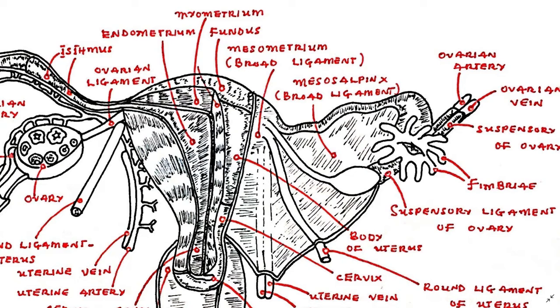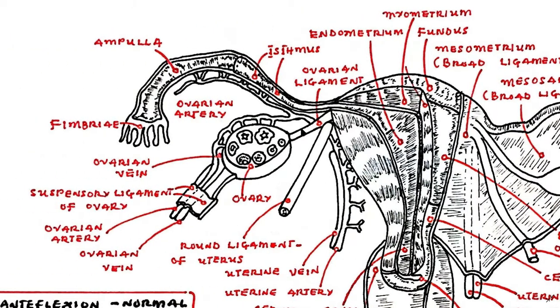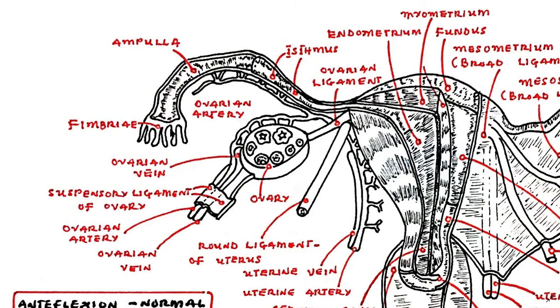The fallopian tube is about four inches long and has three rather distinct parts. These are the distal portion which is known as the fimbri. The fimbri are finger-like projections which catch the discharged ovum and propel it into the tubular lumen. Next is the ampulla, which is the widest part of the tube.